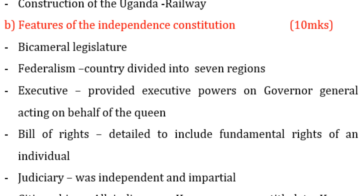Number two: federalism — the country was divided into seven regions, the former eight provinces. Number three: an executive — executive powers were conferred on the Governor General acting on behalf of the Queen. Number four: a Bill of Rights with details including the fundamental rights of an individual.